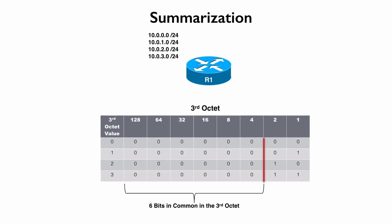To create the summary, we take all of the common bits as our network address and set all host bits to zeros. The first octet is 10, the second is 0, the third octet has zeros through the first six bits with the two rightmost bits set to zero — making it zero — and the fourth octet, full of host bits, is all zero. This means we can advertise a single summary route of 10.0.0.0/22, the 22 representing 16 bits from the first two octets plus six additional bits in the third octet. This reduces routing table size and eases processor burden, since the router doesn't have to run the Dijkstra algorithm on as many routes.